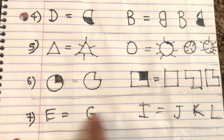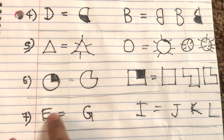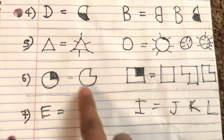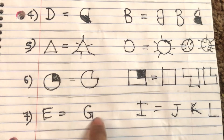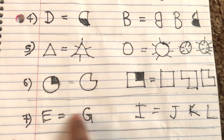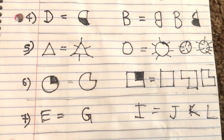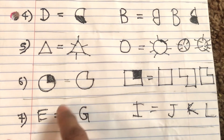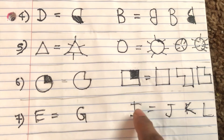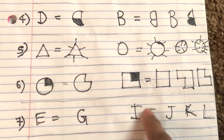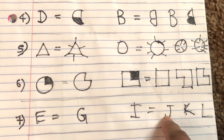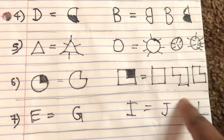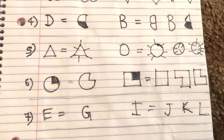For the seventh problem, E is converted into G — F is being skipped. It's like skip counting but in the alphabet. So similarly, I is skipped and the answer is K.